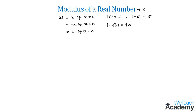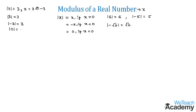Now let us learn how to find the absolute values of equations and inequations. Consider mod x equals three. The solution is x equals three or x equals minus three. If x is positive three, mod three equals three; if x is negative three, mod minus three also equals three. And if x is zero, mod zero equals zero.